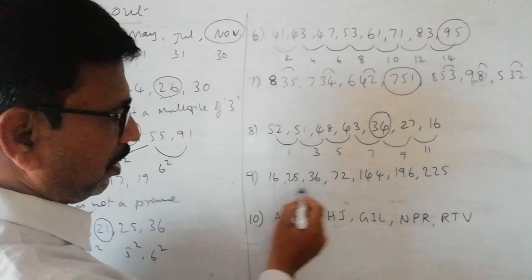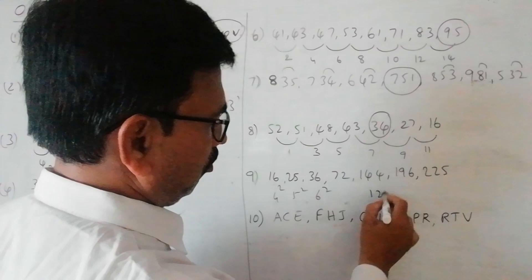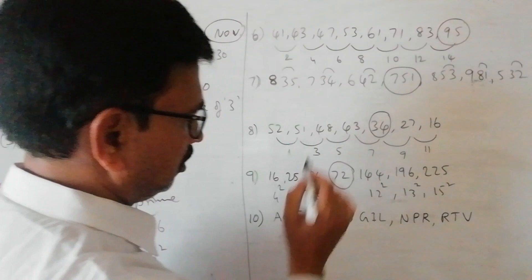Next, in this particular problem, it is simple. This is 4 square, 5 square, 6 square. This is 12 square, 13 square and 15 square. So this one is not a perfect square.